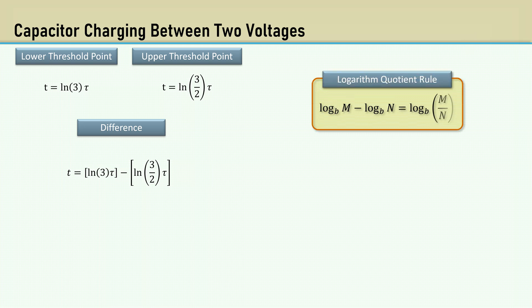where the log of M minus the log of N equals the log of M over N. That gives us the natural log of two times tau, which is approximately equal to 0.6931 tau.